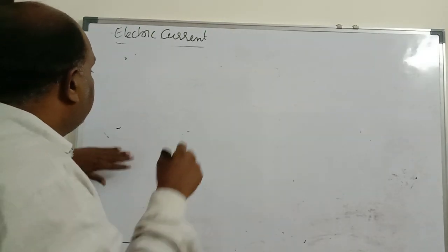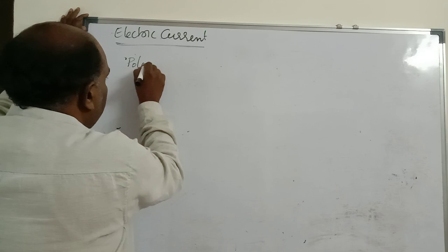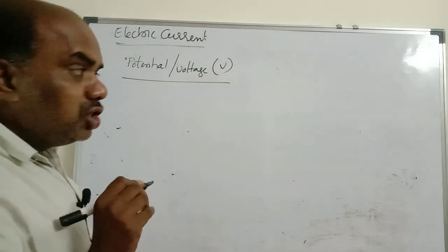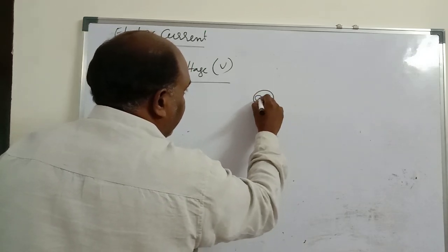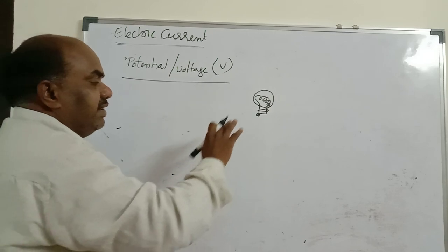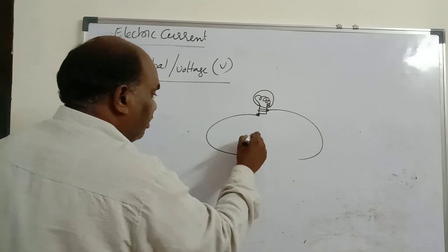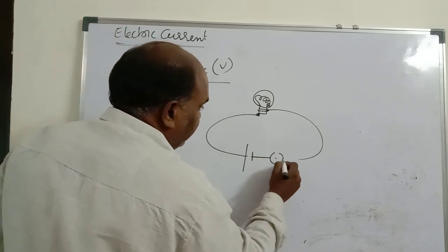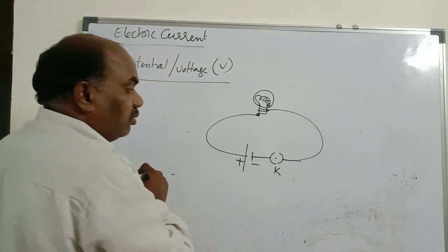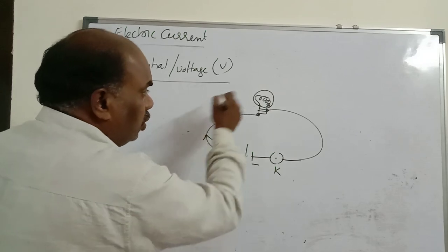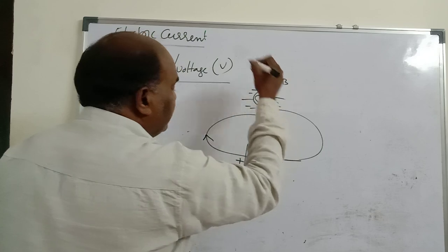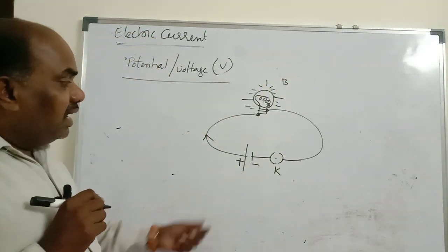Next topic: potential, also called voltage, denoted by V. To understand potential, consider a simple circuit with a consumer — a bulb, fan, or fridge — which consumes voltage. The bulb is connected to a battery with a plug key. The plug key allows or stops the current. Current always flows from the battery's positive terminal (higher potential) to the negative terminal (lower potential), and the bulb glows.